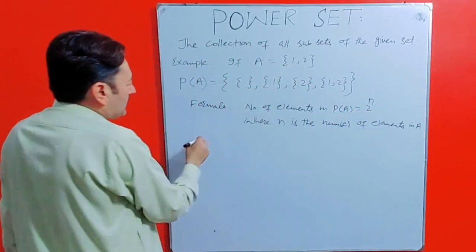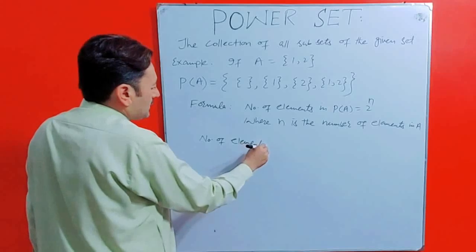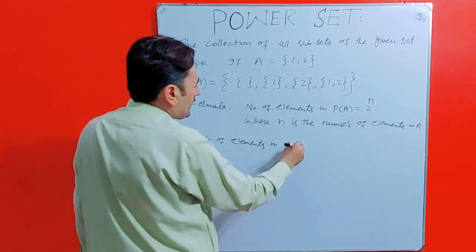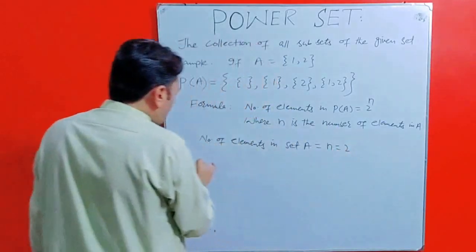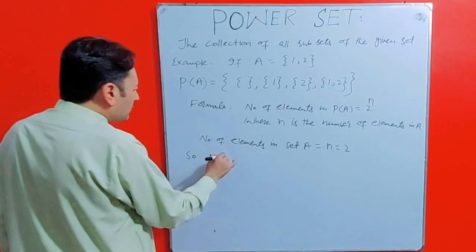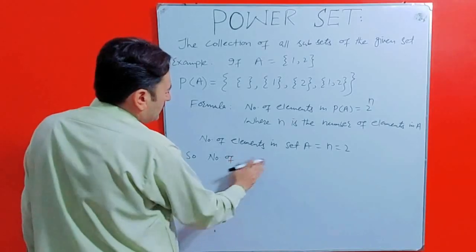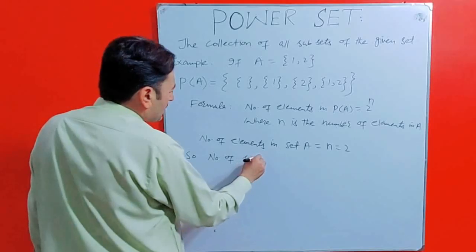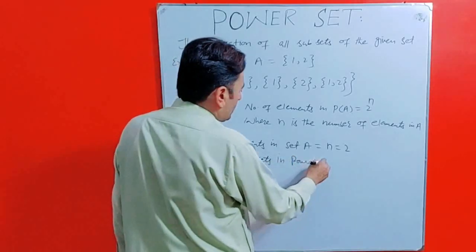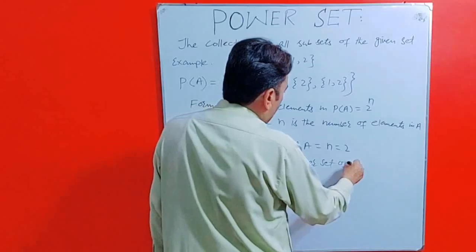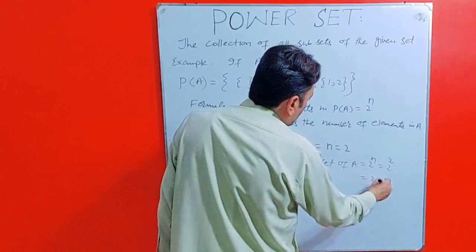So in this particular example number of elements in set A is equal to, which is denoted by n and those numbers are 2. So number of subsets in power set of A is equal to 2 raised to the power n is equal to 2 raised to the power 2. So 2 multiplied by 2 is 4.